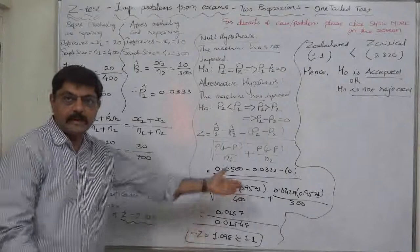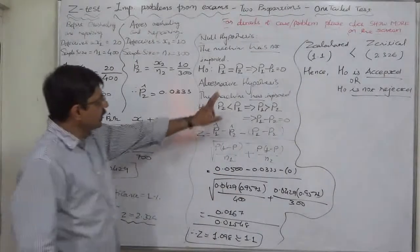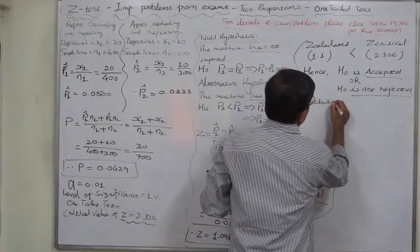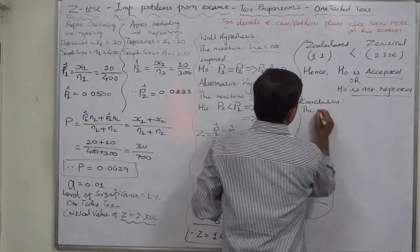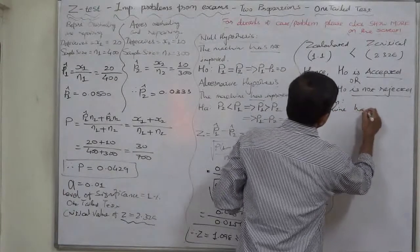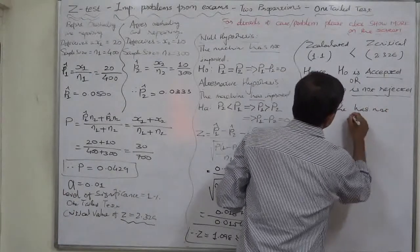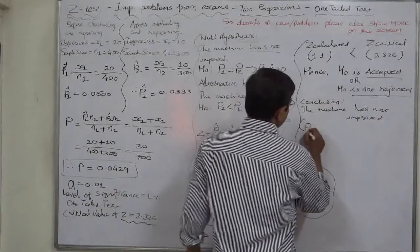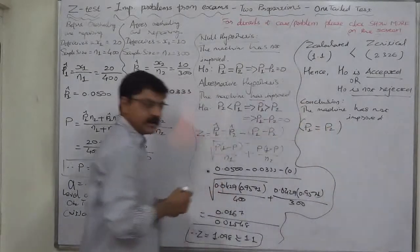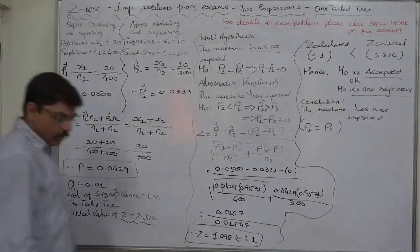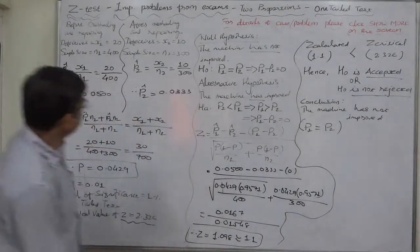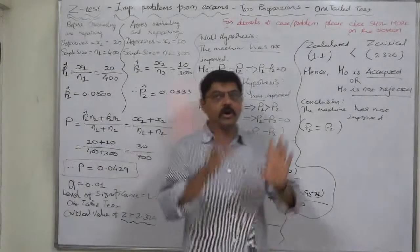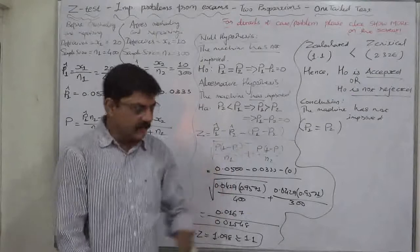After testing, H₀ is correct — we accept the null hypothesis. Our conclusion: the machine has not improved. In general, the proportion of defective articles has remained the same. Whatever difference we observe is due to sampling fluctuations, not because of overhauling and repairing.